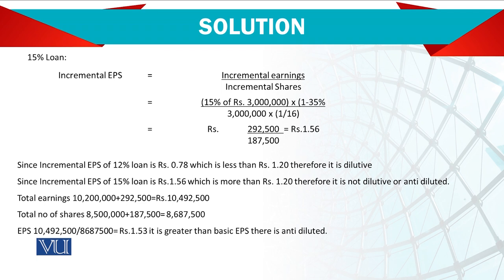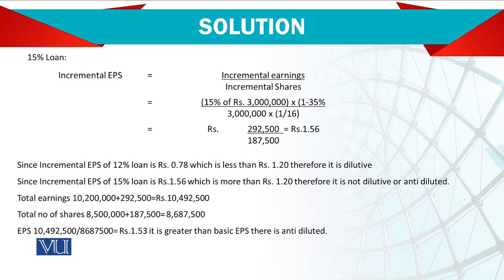Only diluted earning per share is supposed to be recorded. If you look at the total: earnings become 292,500 plus 10,000 = 10,495,500, divided by the total number of shares, giving 1.3. Again, since 1.3 is greater than basic EPS of 1.2, it is anti-dilutive and should not be reported. Thank you very much.